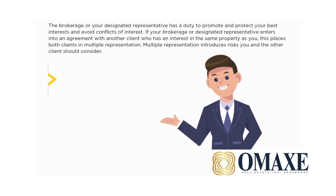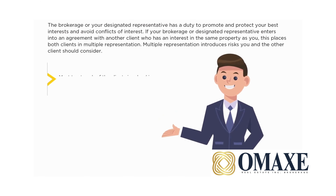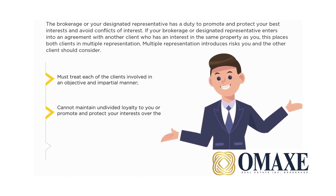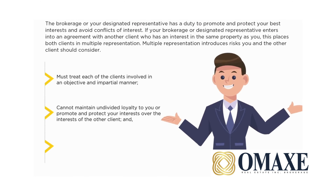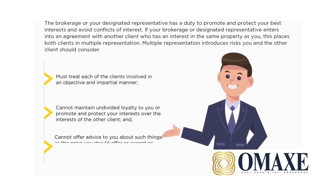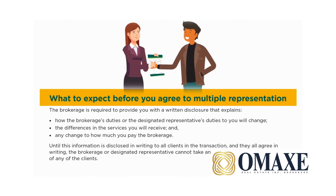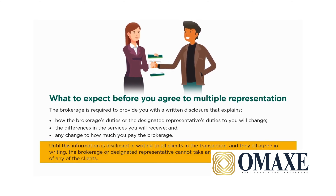If you agree to multiple representation, the brokerage or designated representative must treat each of the clients involved in an objective and impartial manner. They cannot maintain undivided loyalty to you or promote and protect your interests over the interests of the other client, and cannot offer advice about such things as the price you should offer or accept, or terms that should be included in an agreement of purchase and sale. Before agreeing to multiple representation, the brokerage is required to provide you with a written disclosure that explains how the brokerage's or designated representative's duties to you will change, the differences in the services you will receive, and any change to how much you pay the brokerage. Until this information is disclosed in writing to all clients and all parties agree in writing, the brokerage or designated representative cannot take any further steps on behalf of any of the clients.